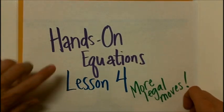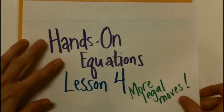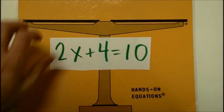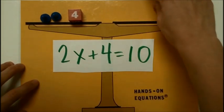This is Hands-On Equations Lesson 4, where we will learn even more legal moves. Let's set up this problem. 2x plus 4 equals 10.